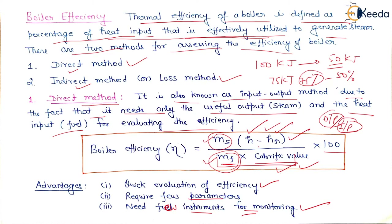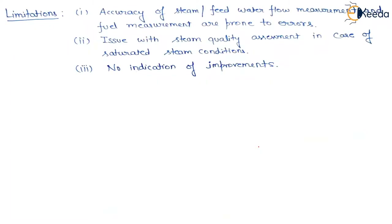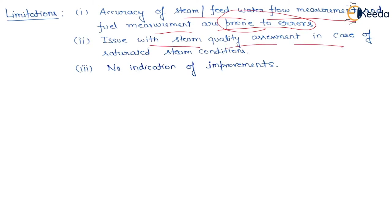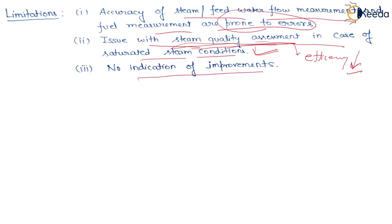However, there are limitations to the direct method. The accuracy of steam, feed water, and fuel flow measurements are prone to error. There is an issue with steam quality assessment in the case of saturated steam conditions, which can affect efficiency. Also, there is no indication of where improvements can be made, so improvement chances are limited.